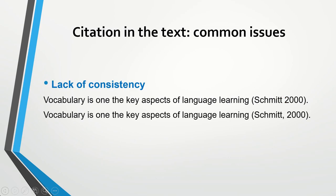Another issue is related to consistency. In some referencing styles there is no comma between the surname and the year of publication, and that is fine — you can use this style. But you need to be consistent. If you decide to use this referencing style, make sure you use it throughout your work. You can't have a comma in some cases and no comma in other cases. Whatever version you prefer, please be consistent.